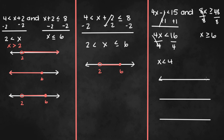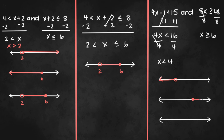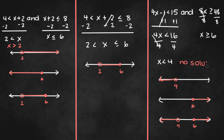For x is less than 4, we have an open dot since it's less than — not less than or equal to — and we're moving to the left. For x is greater than or equal to 6, we have a closed dot and move to the right. When you combine both graphs, there is no overlap, and therefore this compound inequality has no solution since there is no overlap. A graph of a compound inequality involving AND will look something like this.